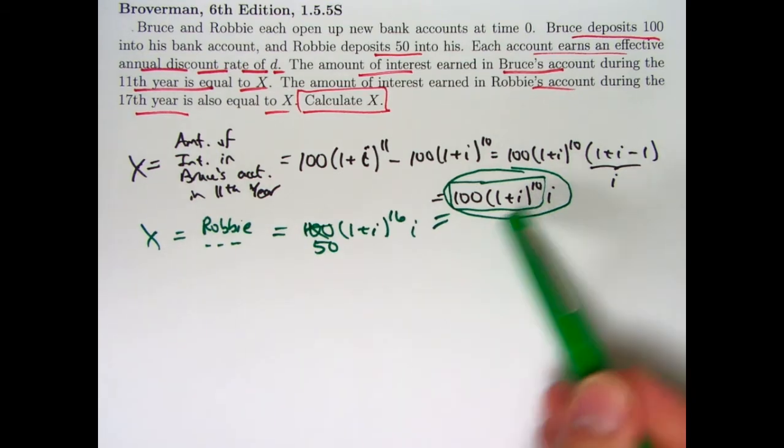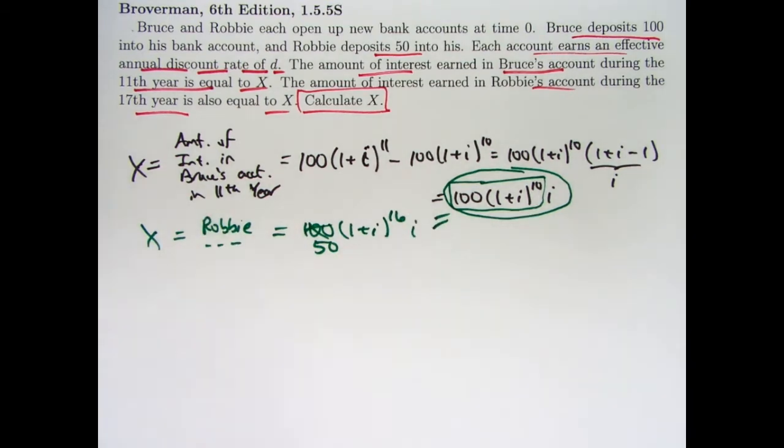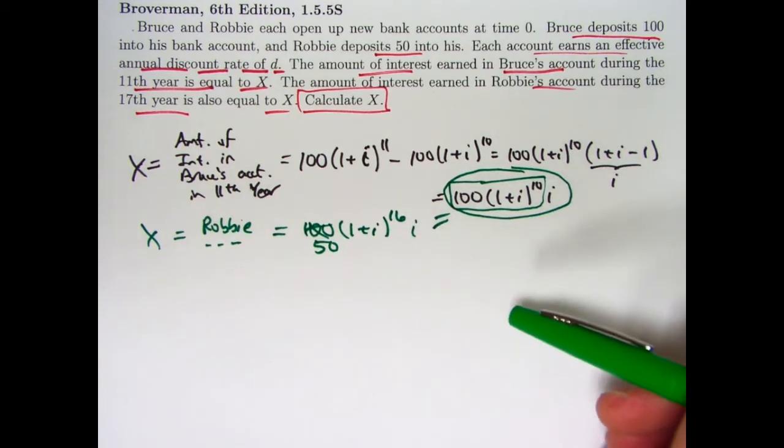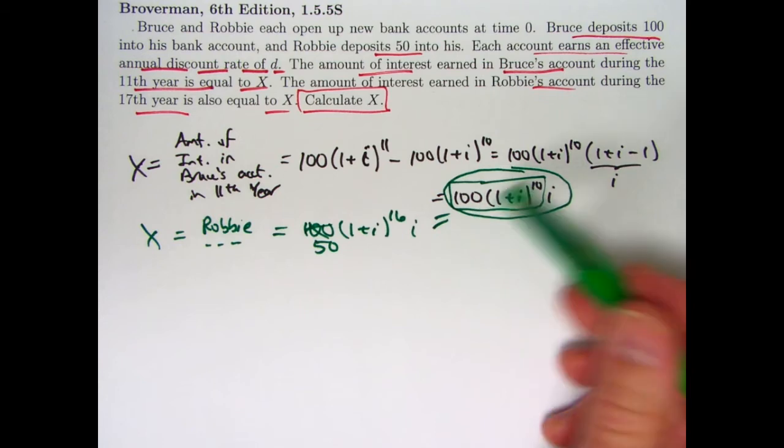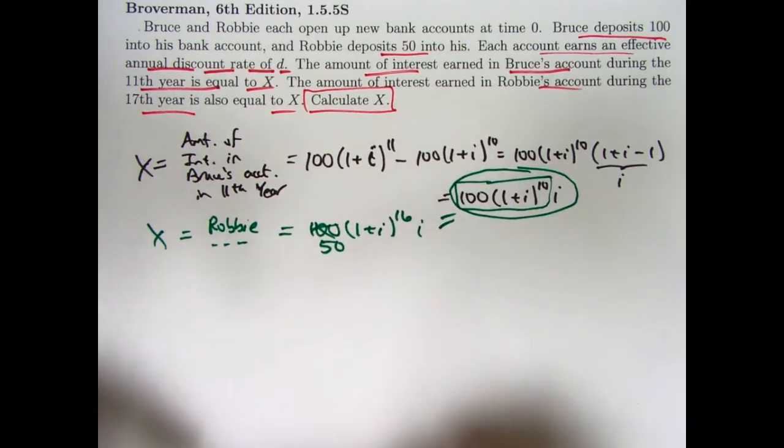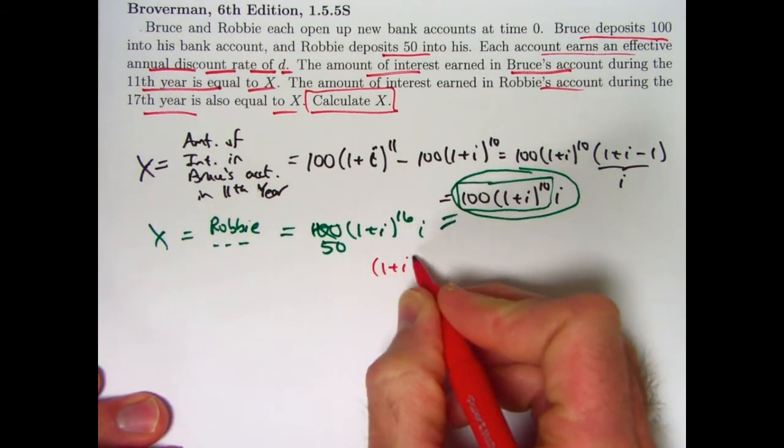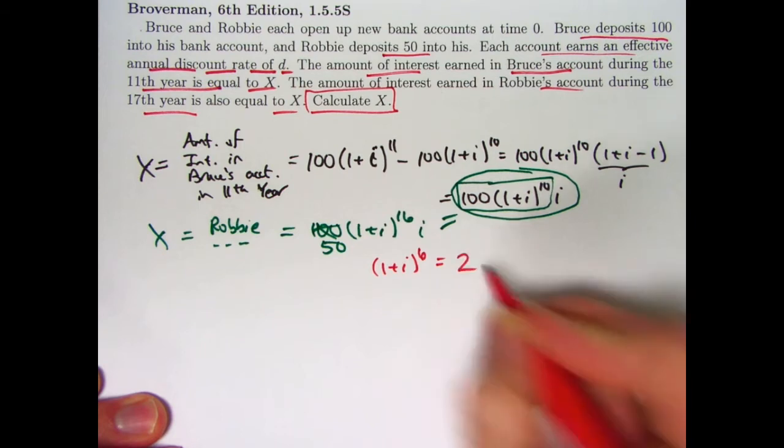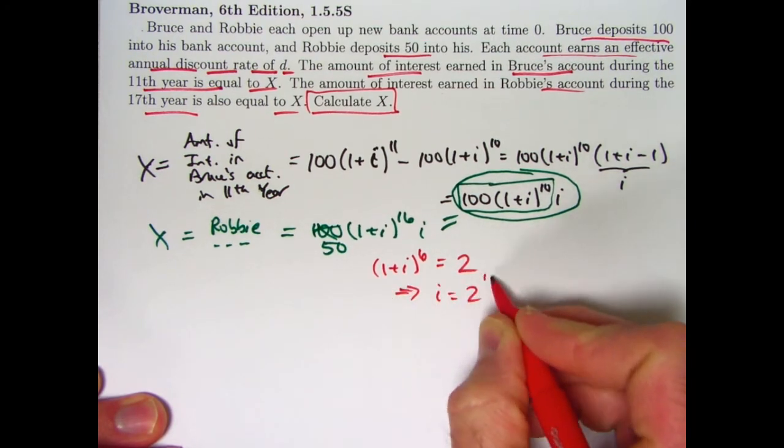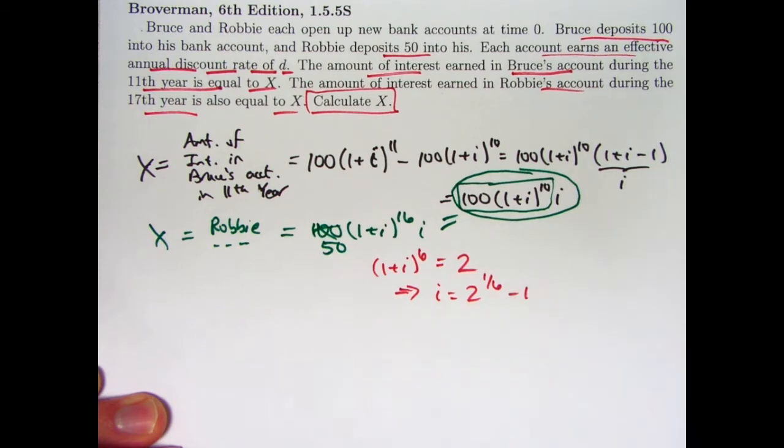So now I set these equal to each other and solve for i. And once I've got i, then I can use either equation to solve for x. So let's see. If I set these equal to each other, I can divide both sides by 50 to get a 2 on the right side. I can also cancel the i's. And I can divide both sides by 1 plus i to the 10th. It looks like I'm going to get 1 plus i to the 6th equals 2. So i is going to be 2 to the 1 sixth power minus 1.